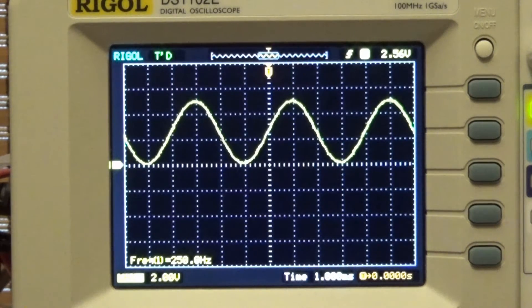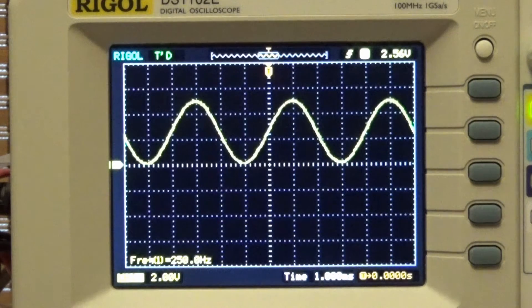Now this is the output of the Direct Digital Synthesis or DDS project that I did in the previous video and it's producing a nice 250 Hz signal.